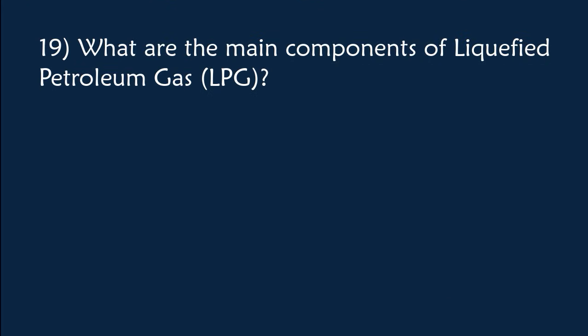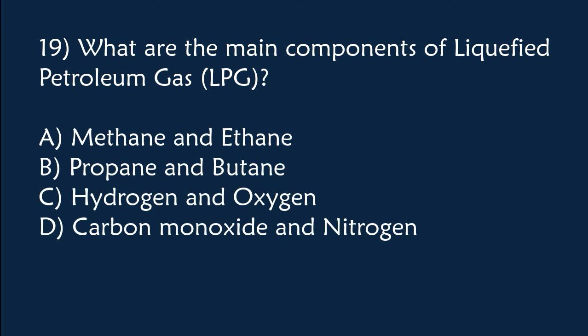What are the main components of Liquefied Petroleum Gas (LPG)? A) Methane and Ethane, B) Propane and Butane, C) Hydrogen and Oxygen, D) Carbon monoxide and Nitrogen. The correct answer is Option B, propane and butane.